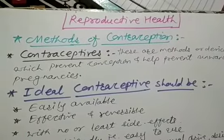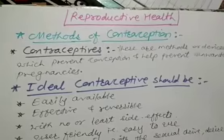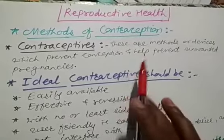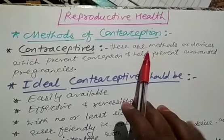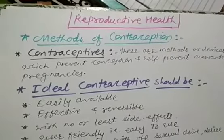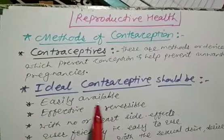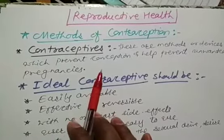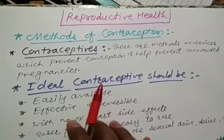Welcome back students. Today we will see the remaining part of the reproductive health chapter from class 12. In this video we will see about the methods of contraception. In the previous video we studied about population, demography, census, and the reasons why the population is increasing day by day. In this video we will see the methods which help reduce the population and extra or unwanted births.